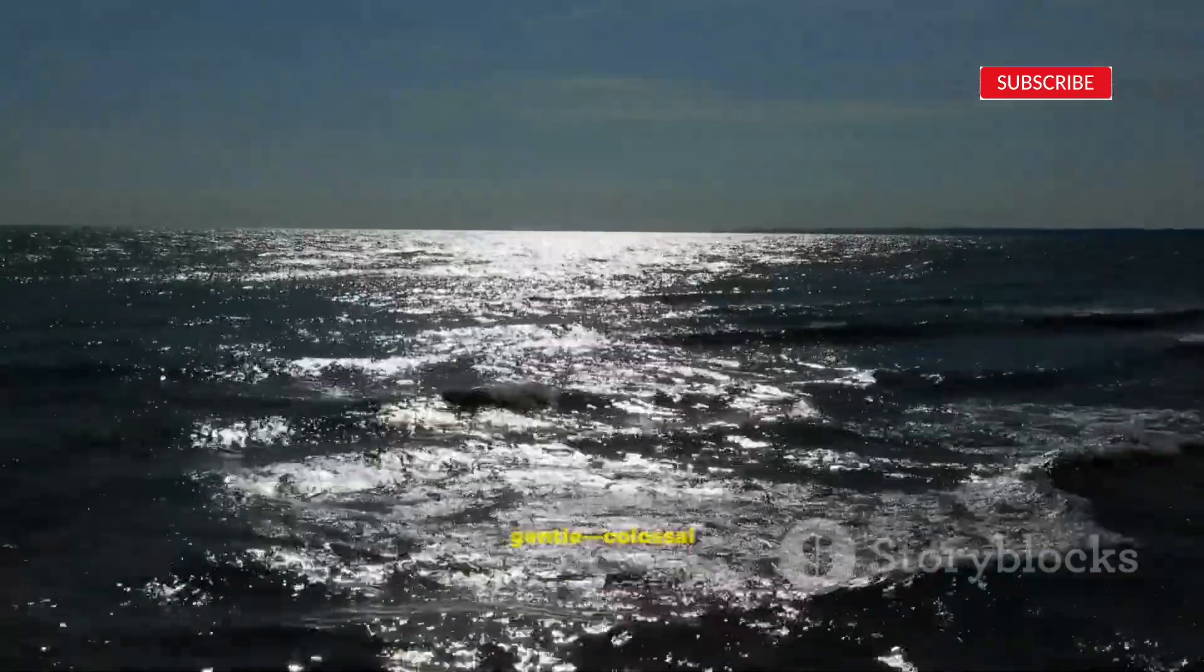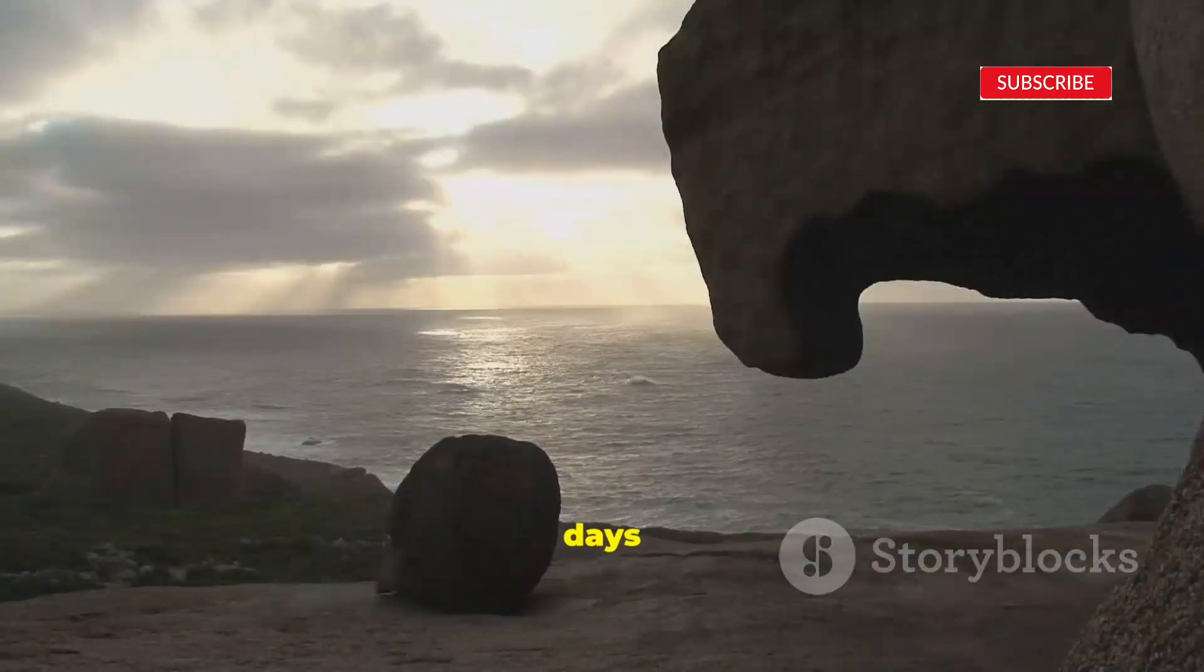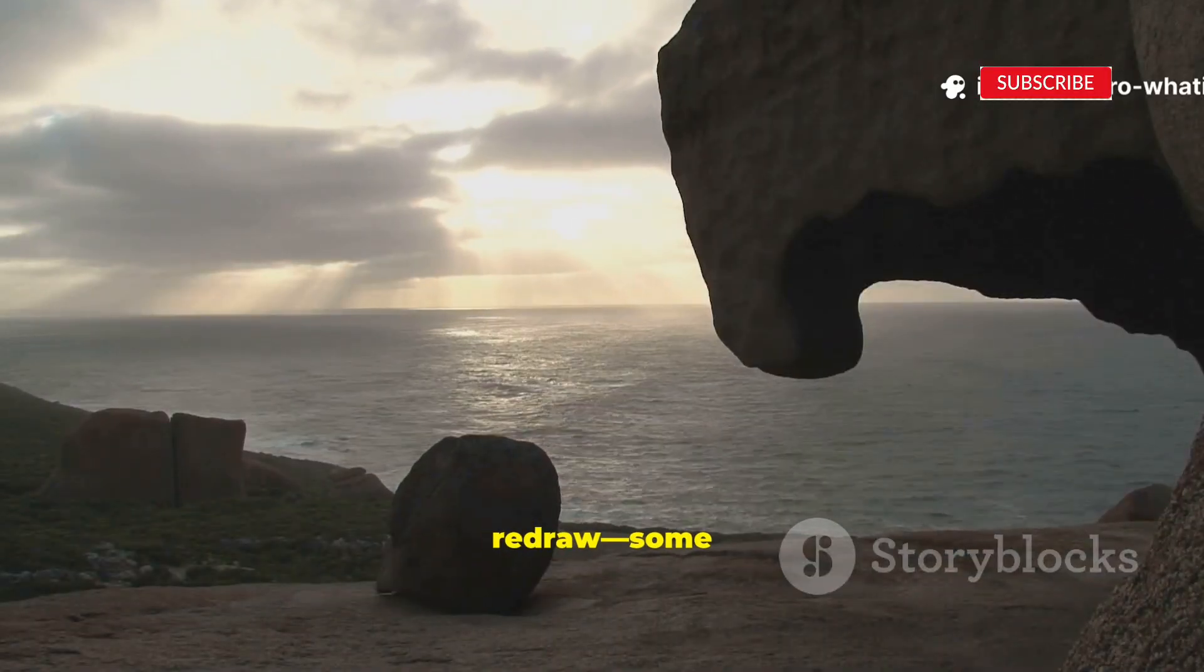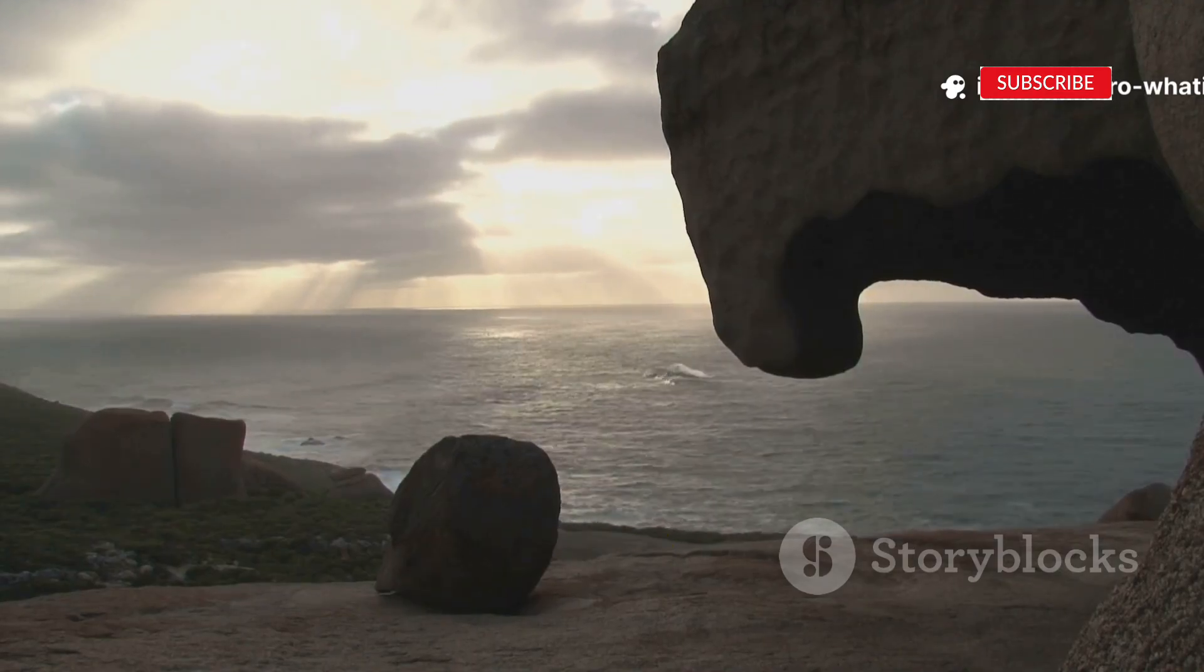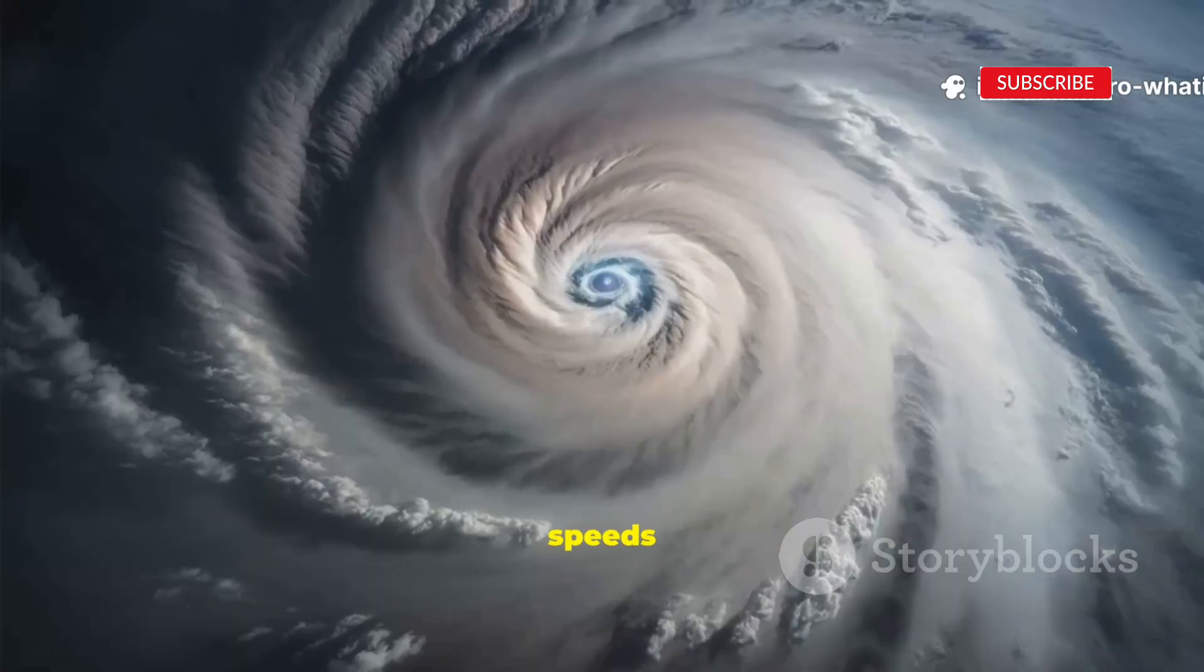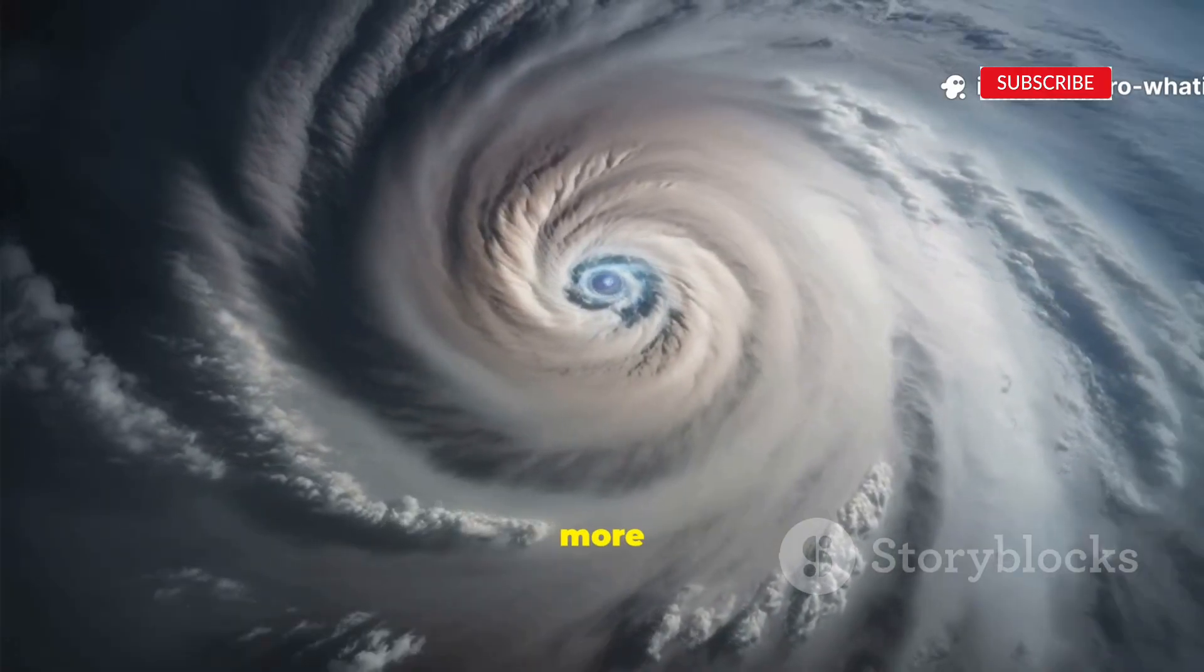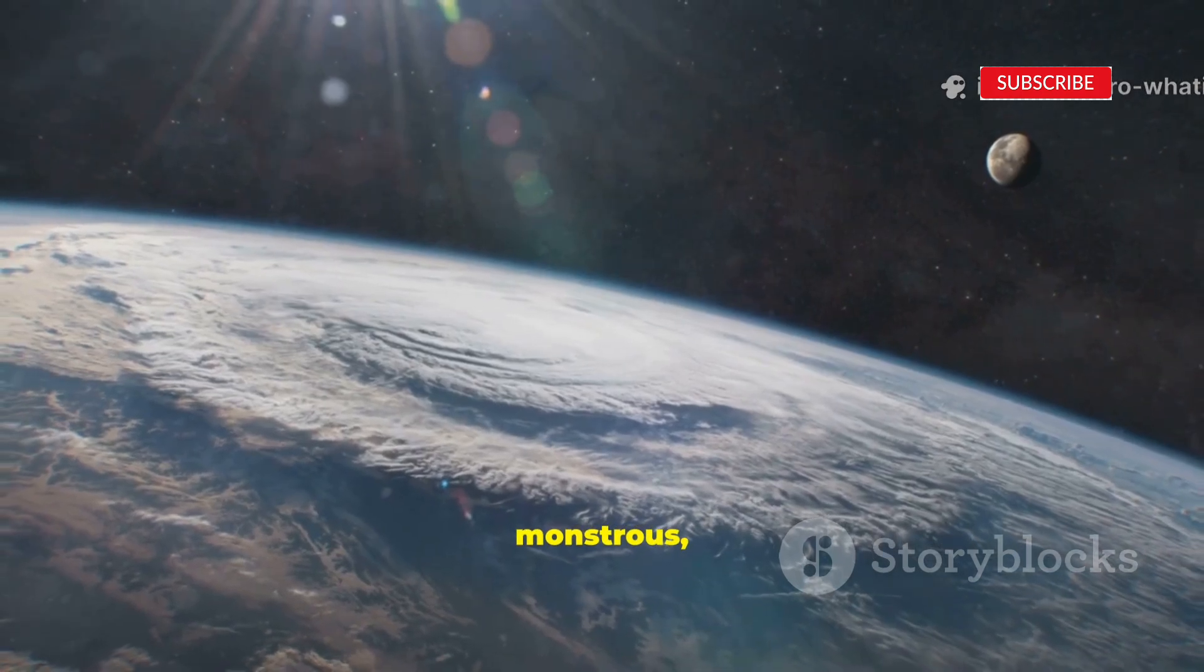Redistribution would not be gentle. Colossal waves rush toward the equator in days or weeks. Coastlines redraw. Some islands vanish, new land appears at higher latitudes. Acceleration injects energy into atmosphere and oceans, fundamentally altering weather. The Coriolis effect strengthens, deflecting winds and currents more. Wind speeds rise, storms become more frequent and powerful. Hurricanes and typhoons could grow monstrous, beyond any records.